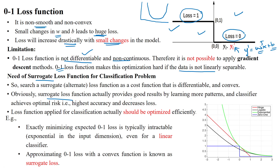The surrogate loss function will provide good results by using patterns learned from the dataset, and the classifier achieves minimum risk and minimum error by giving highest accuracy and decreasing loss. The loss function applied for classification should be optimizable — by applying differentiation we can optimize it, and differentiation gives a convex curve with a smooth state.